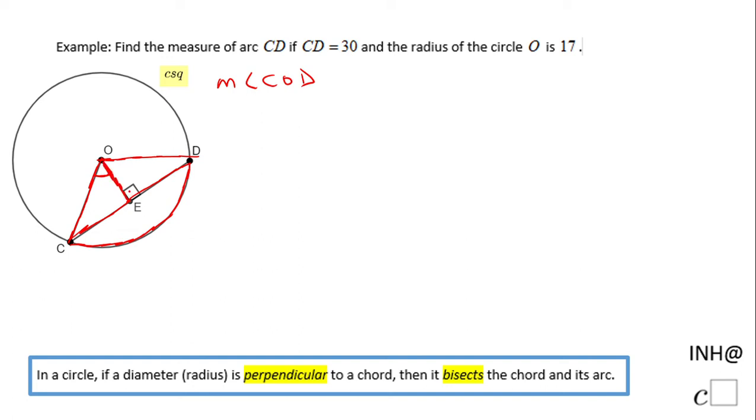That means these two parts are congruent. CE is congruent with ED. Why? Because OE is perpendicular on CD, therefore it bisects CD. And we know CD is 30, which means CE, which equals ED, are going to be half of CD, which tells me CE will be 30 divided by 2, which is 15.